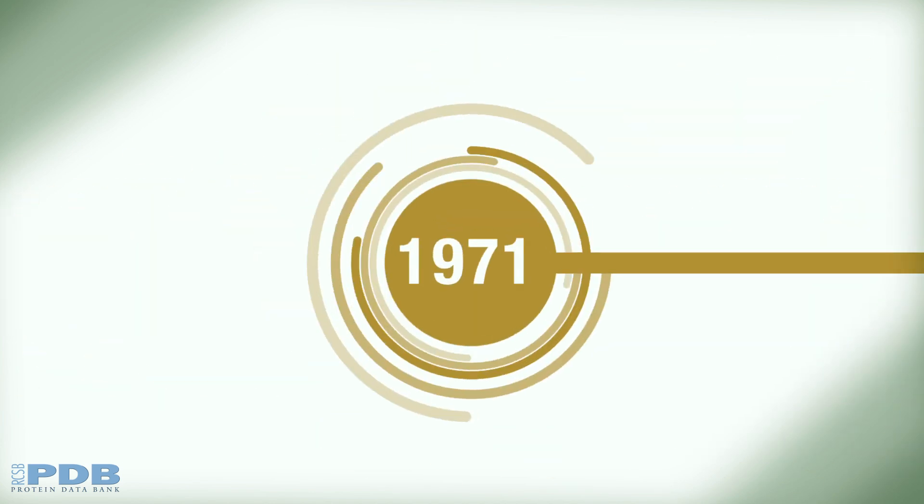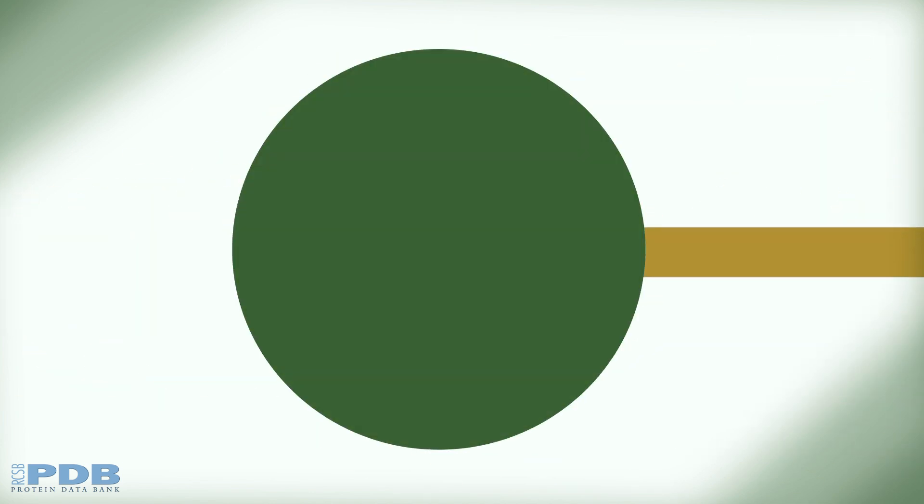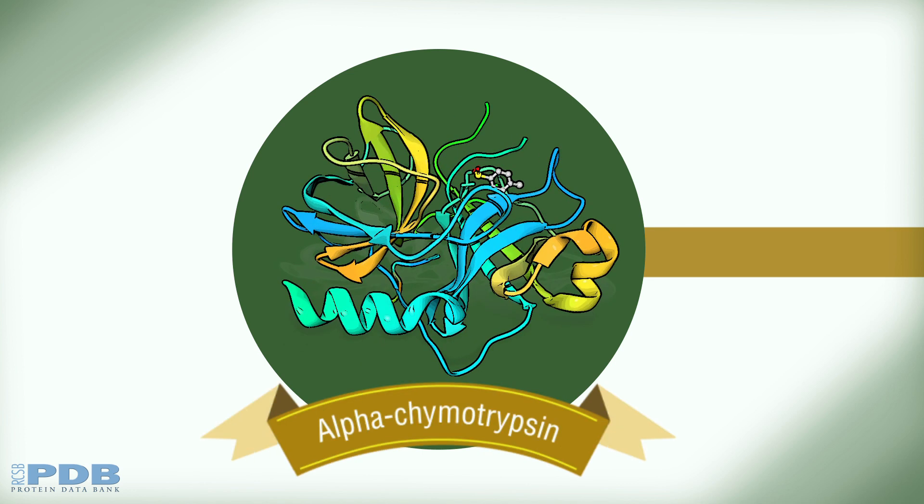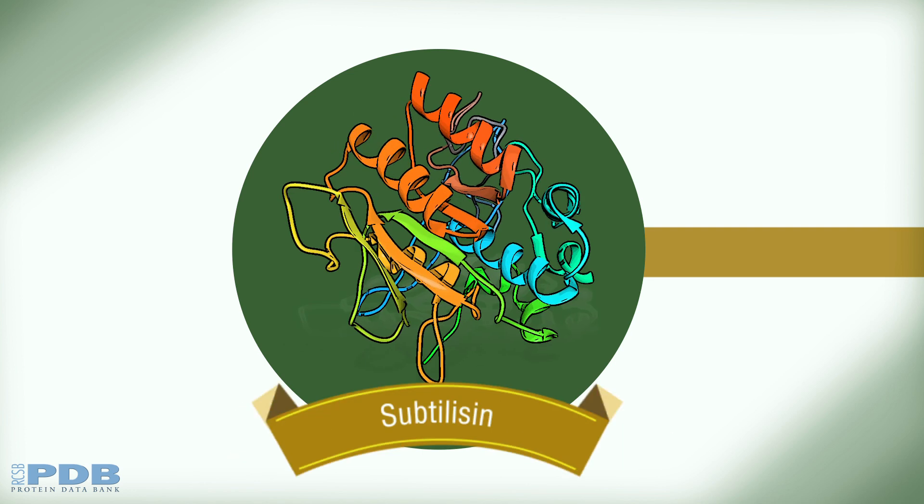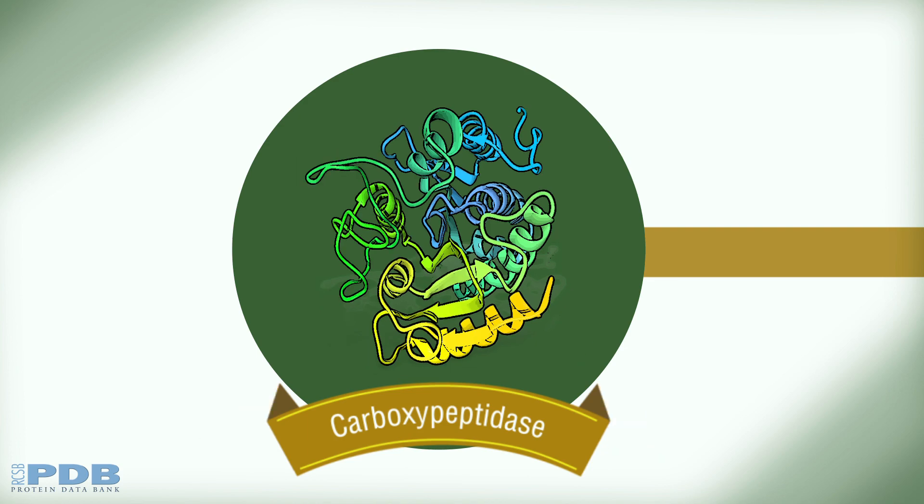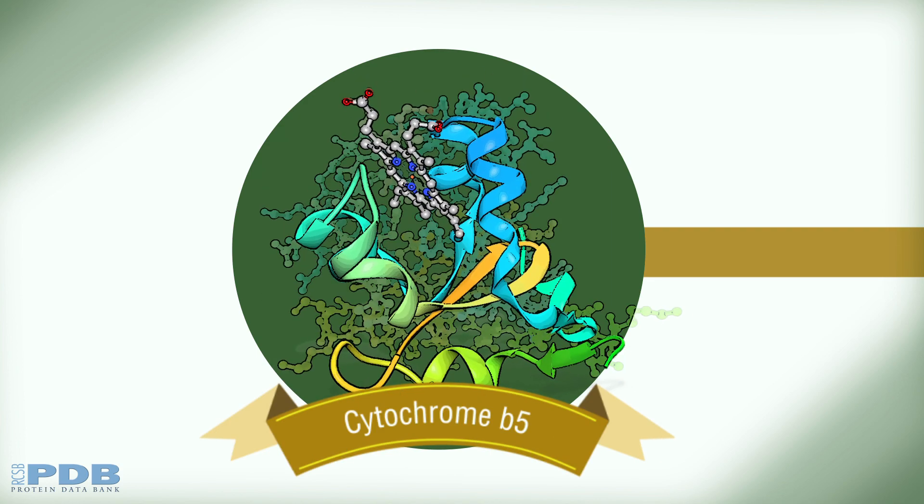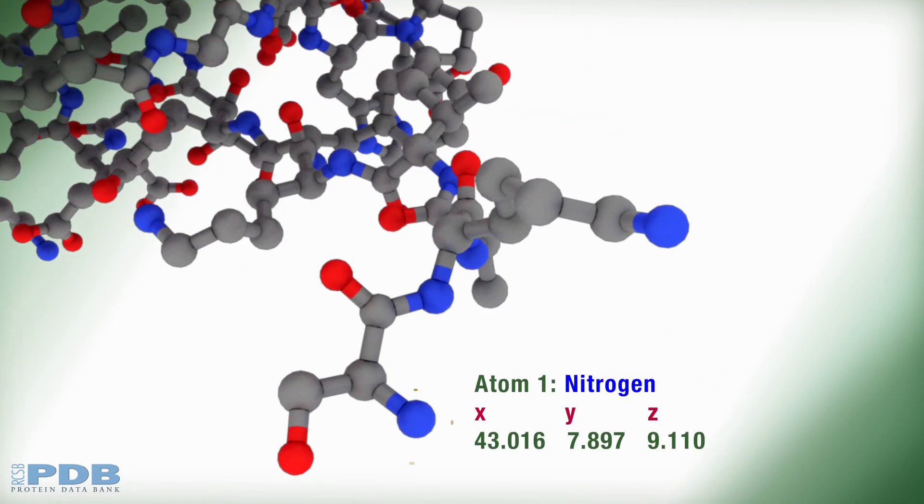The Protein Data Bank was established in 1971. In its first few years, the archive was very small and contained a few groundbreaking structures. For each structure, the PDB contained the three-dimensional coordinates, or the X, Y, and Z positions of each atom.